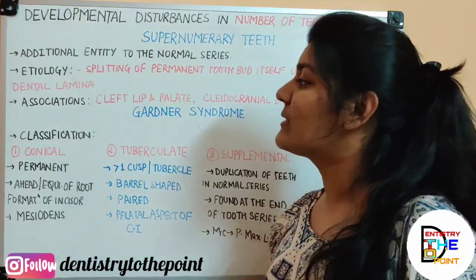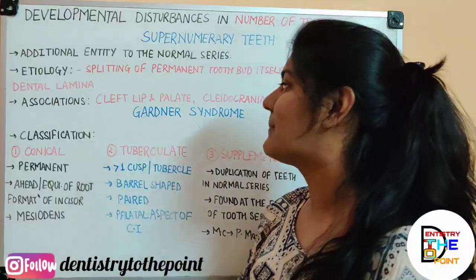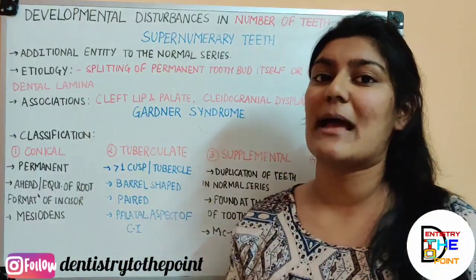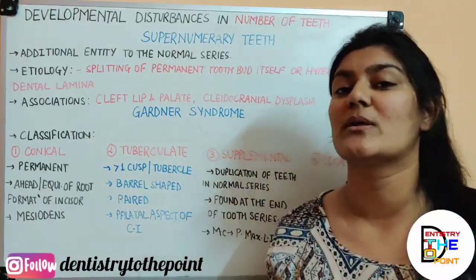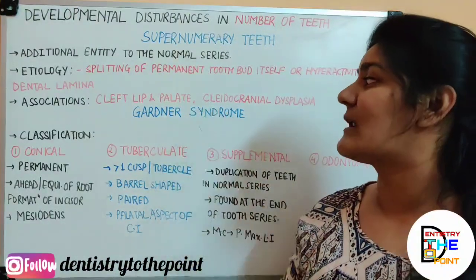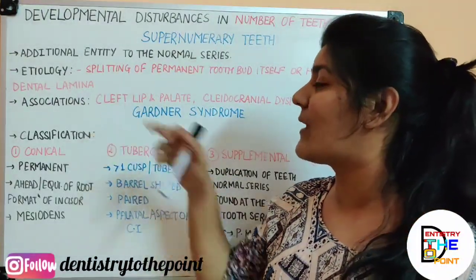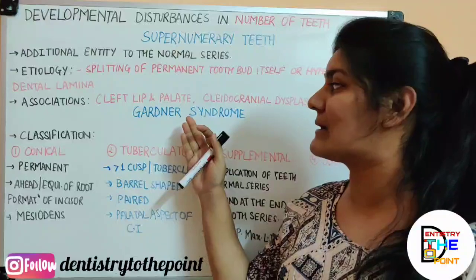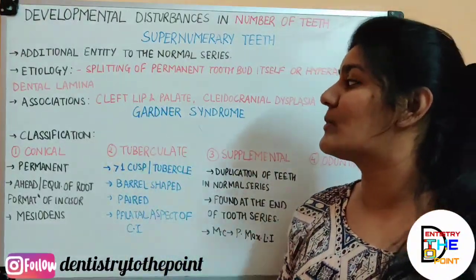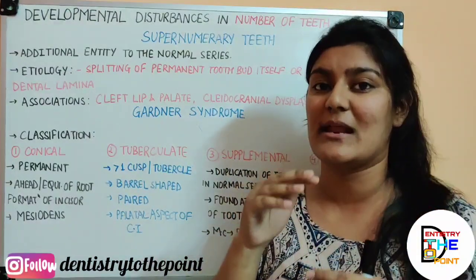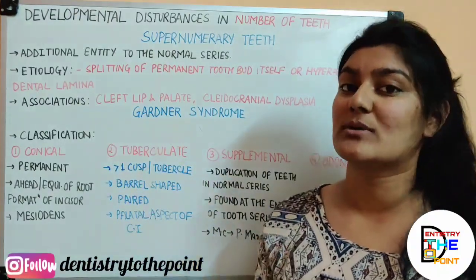Supernumerary teeth has a strong association with three conditions. Firstly, cleft lip and palate — in 22.2% of cases of cleft lip and palate, a supernumerary tooth exists. It is found in relation to mostly unilateral cleft lip and palate, and it usually develops during the formation of the cleft.